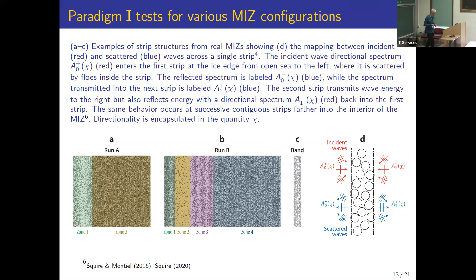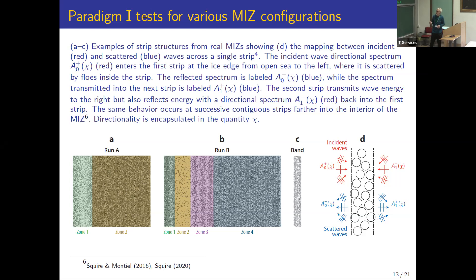Schematically: waves come in from the left at the ice edge, we get reflection back but some energy goes into the next strip which reflects back into the first, and so on — we can solve for all strips together. We can do this for a simple situation of two zones with different concentration and randomized disc diameters, or something more complicated where concentration varies and floe sizes differ across strips to replicate a realistic marginal ice zone. This model replicated a MIZEX experiment very well, where instruments were placed on either side of a band to measure the directional spectrum.